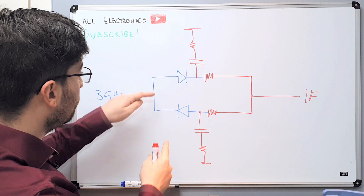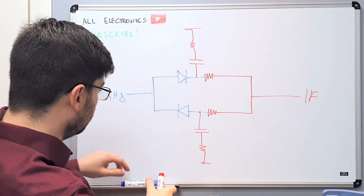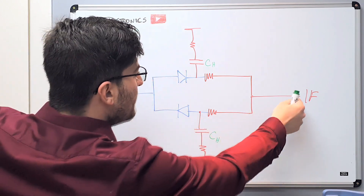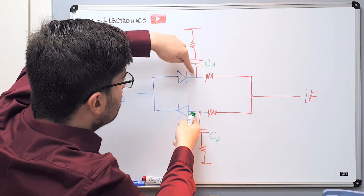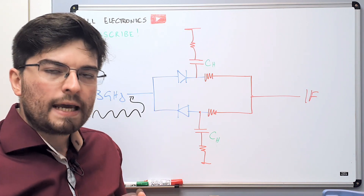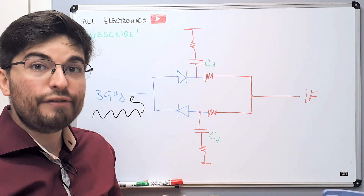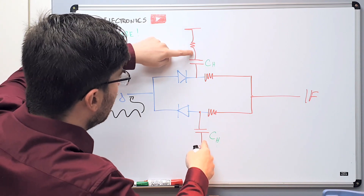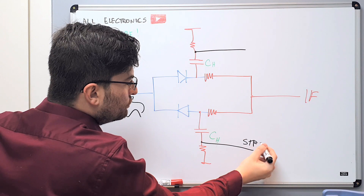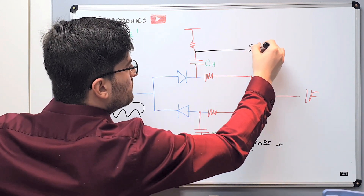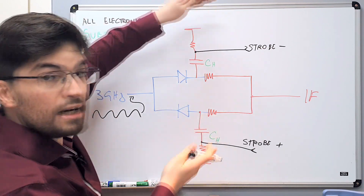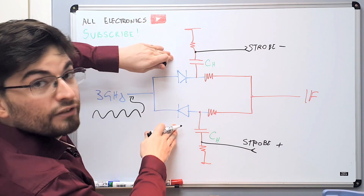We have two diodes, two holding capacitors (C-hold), and a balanced structure with two resistors so we can sense the IF signal from both holding capacitors simultaneously. In this input we have the 3 GHz signal. The two nodes used to switch the diodes are called strobe — strobe positive and strobe negative. We need to apply a differential signal on the strobe lines. The strobe signal is what will turn the diodes on and off — it is the switch of our sampler.